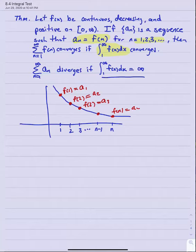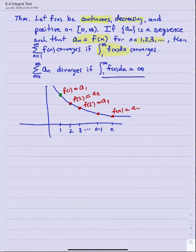What does the function do in between those integers? It doesn't matter, as long as the function is continuous and decreasing. Continuity guarantees that there's no major wiggling in between those sequence value points, and decreasing guarantees that it keeps going down. So in between a1 and a2, for example, the function isn't going to take off wildly and do some massive increase and then some massive decrease. It's going to steadily decrease in between those two, and that's essential for this test to work.